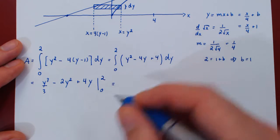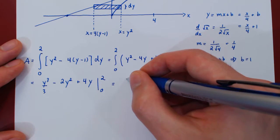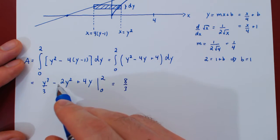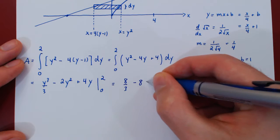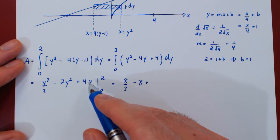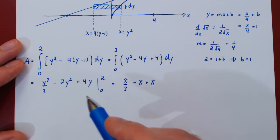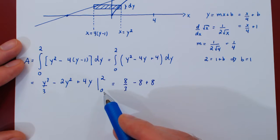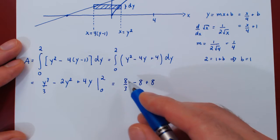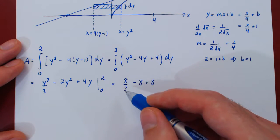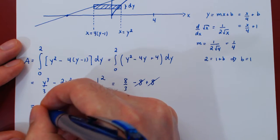Plugging in y equals 2: 2 cubed is 8 over 3, minus 2 times 2 squared which is 8, plus 4 times 2 which is 8. When y equals 0, everything vanishes. So we're left with 8 thirds minus 8 plus 8 — the minus 8 and plus 8 cancel — leaving 8 over 3.